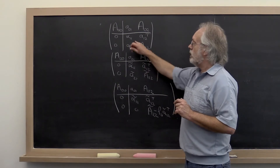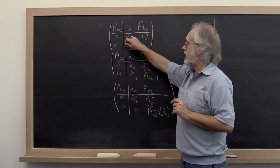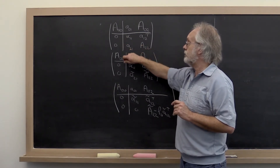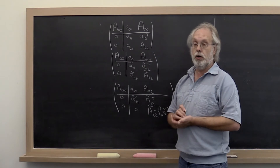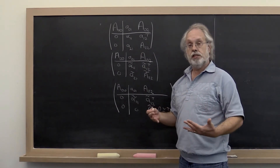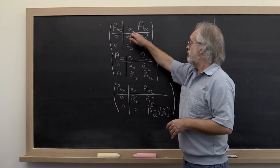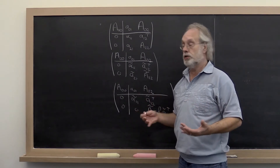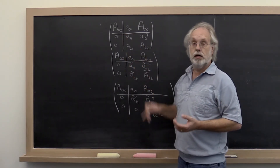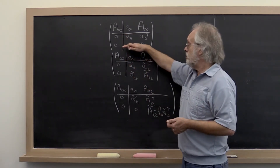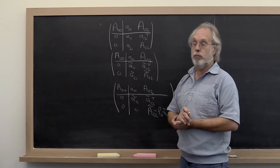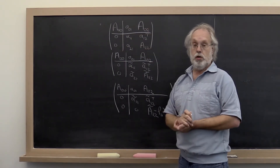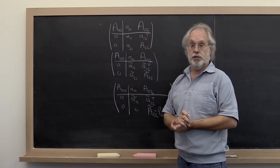Since we want to avoid having an element that is small in magnitude relative to the entries below it, the safest thing to do is to find the element that has maximal magnitude among these entries right here, and then move that entry to the top — which means moving the entire row into that position.